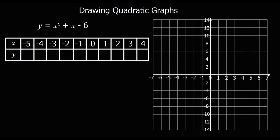Here's another one — try and fill out the grid and then plot the coordinates. If using a calculator, put brackets wherever the x's are and substitute numbers into the brackets. For x = 4: 4 squared is 16, plus 4 is 20, take away 6 is 14.